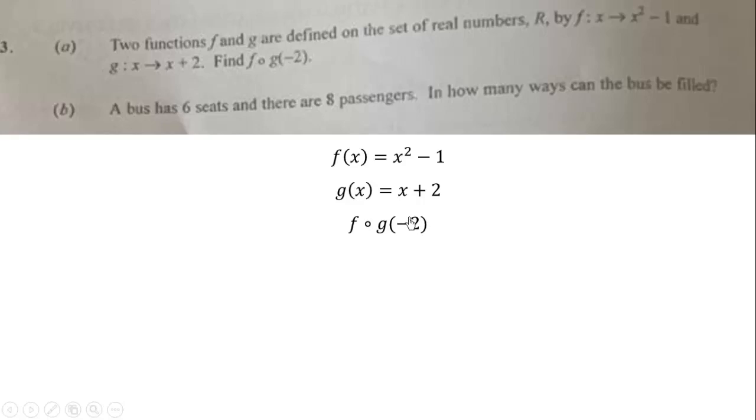We can plug in negative 2 into g and put the results in f, but let's go by this approach. Now f∘g(x) is equal to f(g(x)).